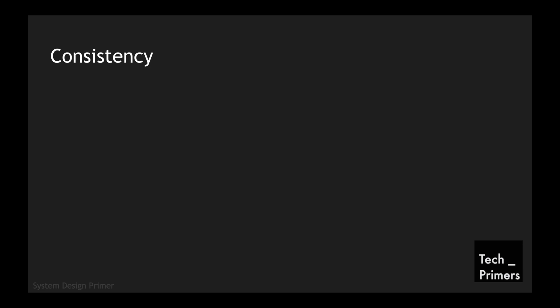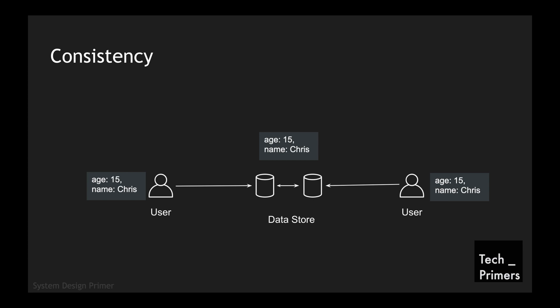The next key term is consistency. Using the same example: every user gets the same data from the data store irrespective of which node they are querying from. This is called consistency. At any point in time, if multiple users query the data store, they will all get the same data. I call it same data.